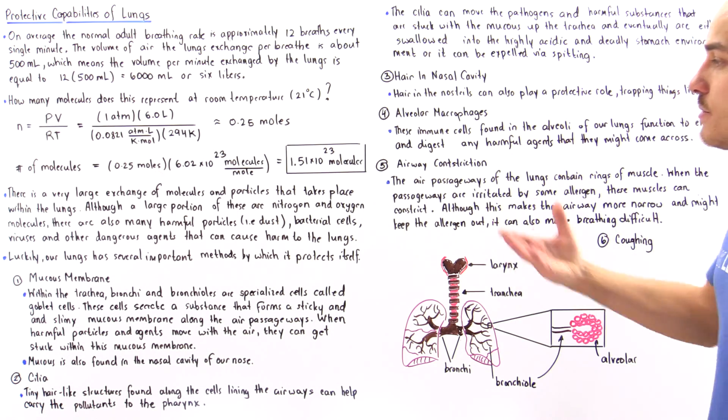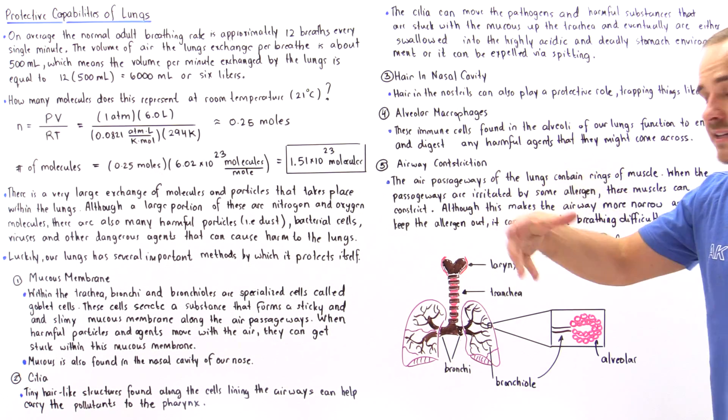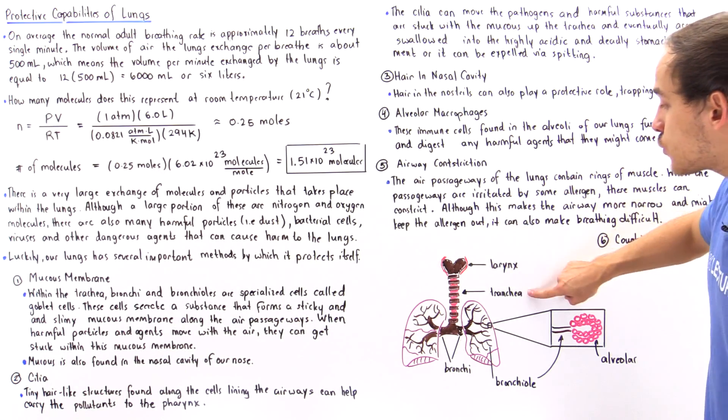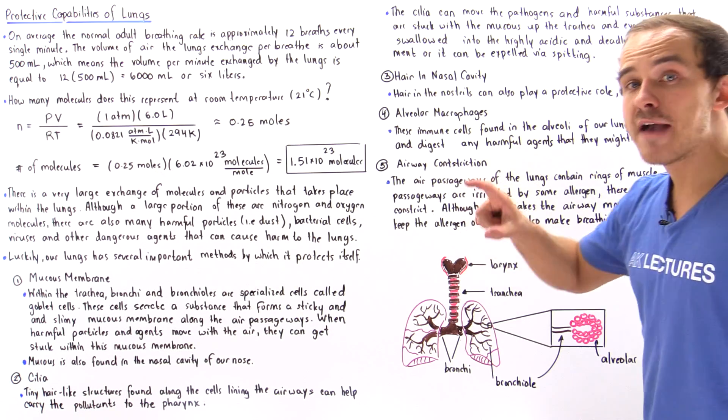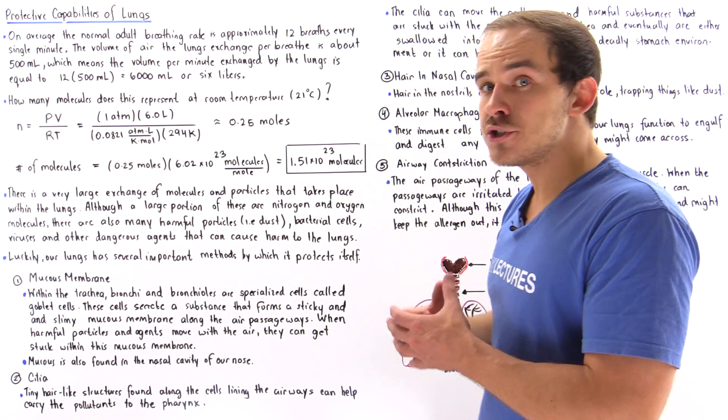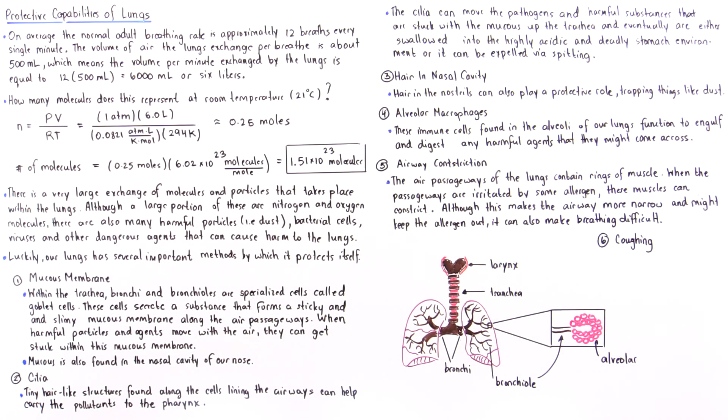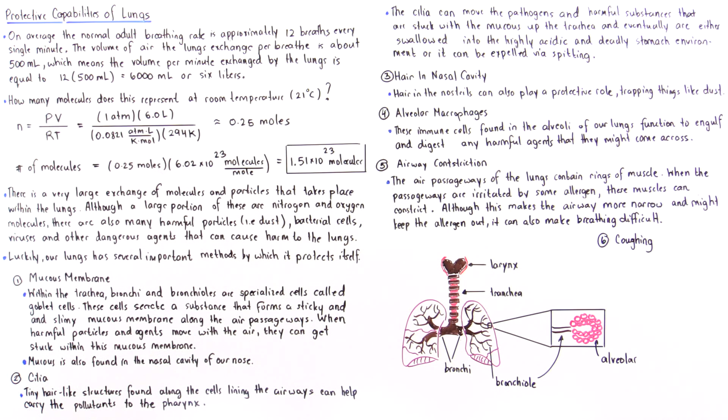We'll see how the alveoli also help us protect from these pollutants in just a moment. This is our larynx—it's the voice box. The larynx connects our trachea to the pharynx, which is found right here. The pharynx is the connection point between the esophagus, our mouth, as well as our larynx.